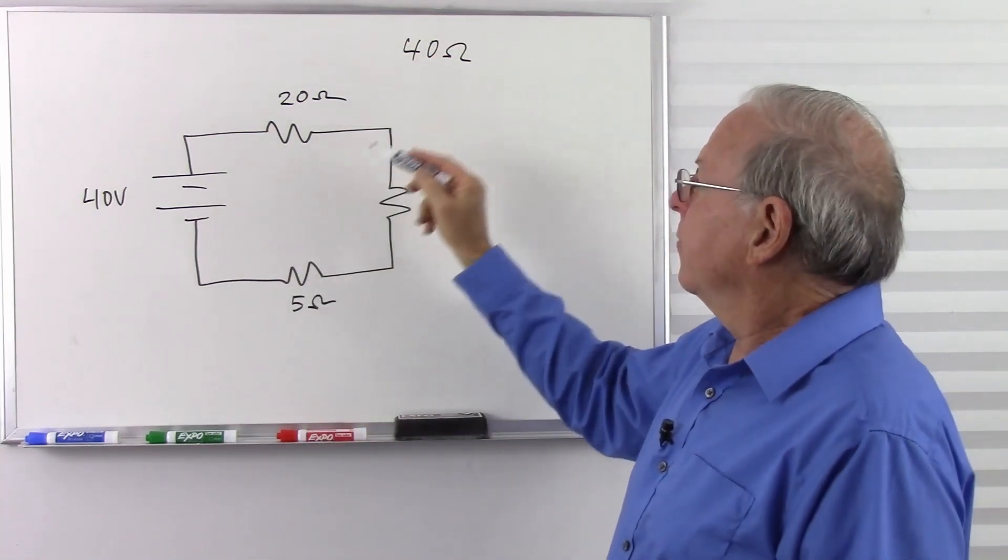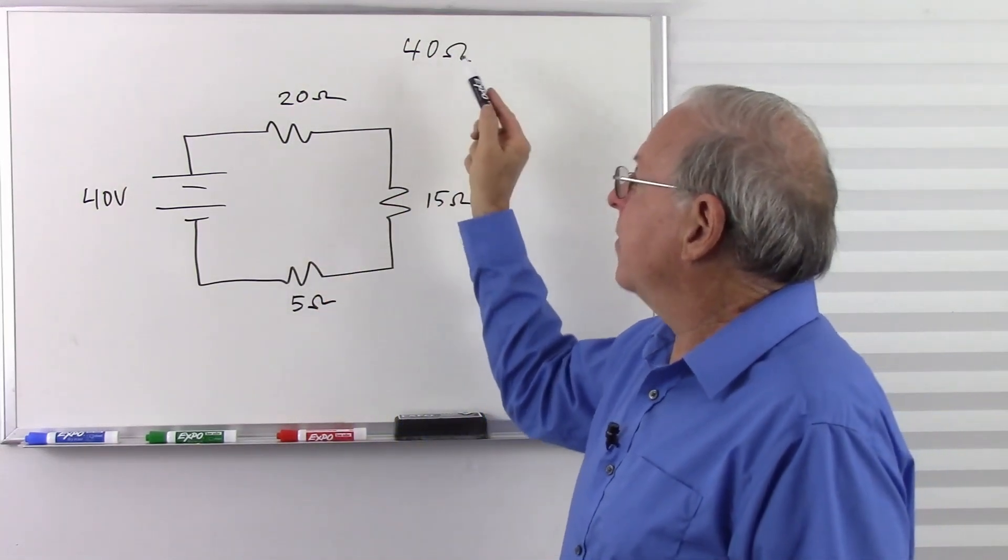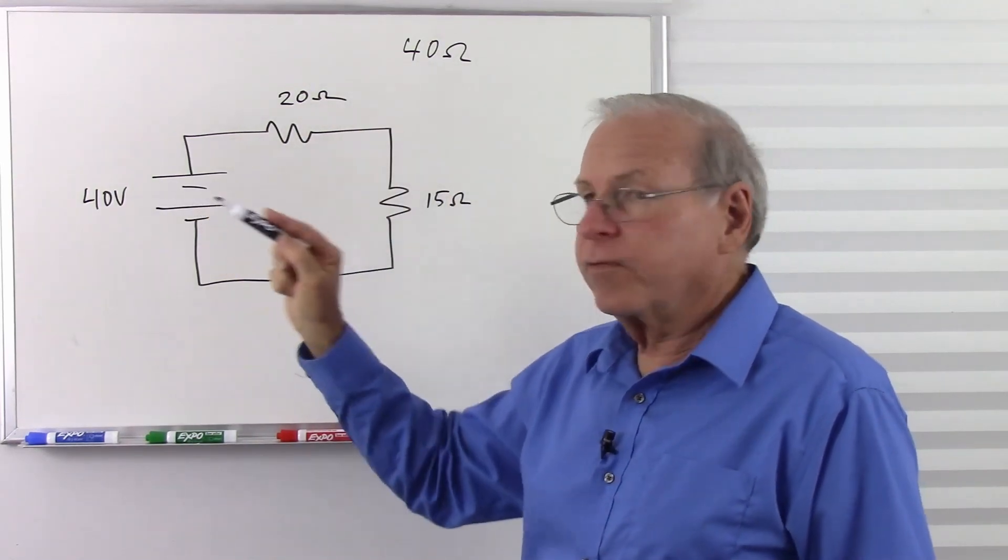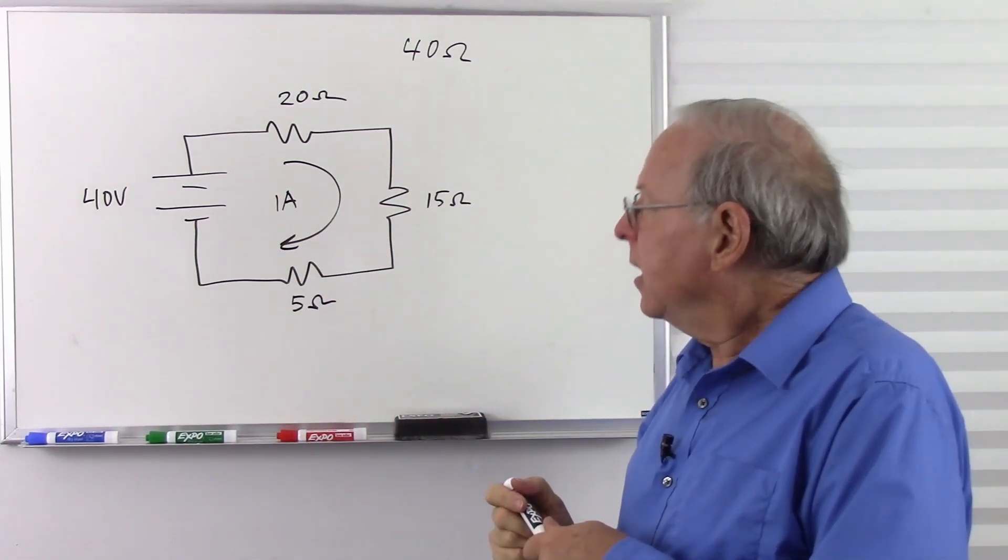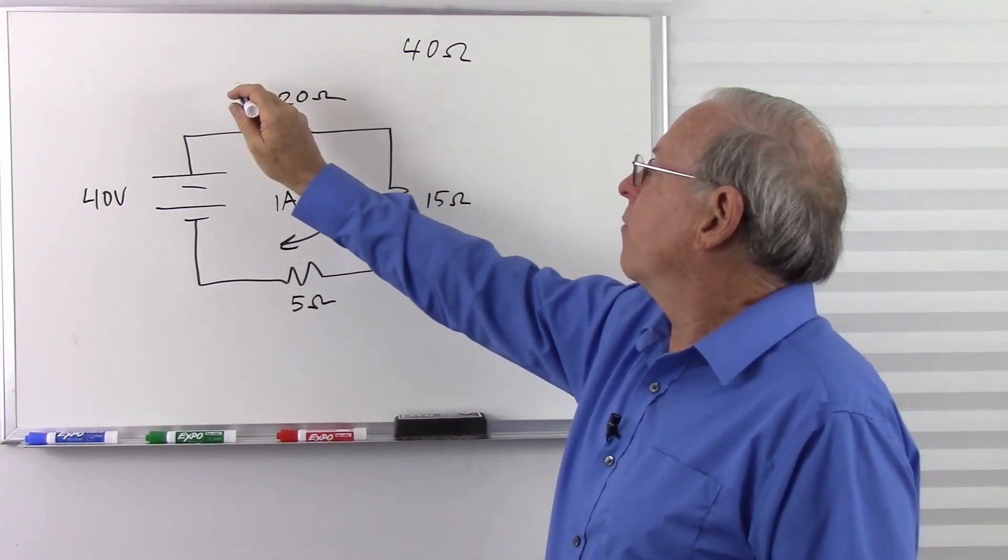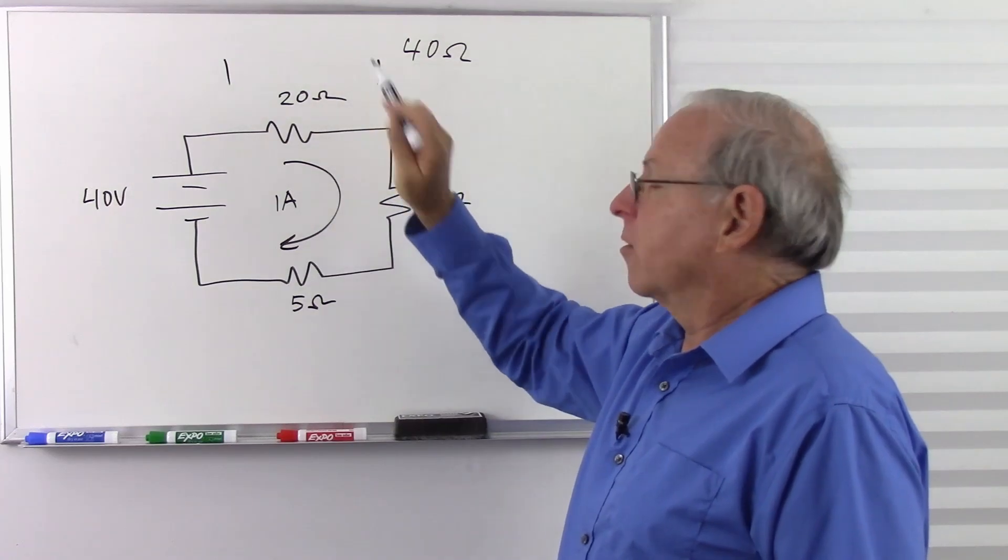So 20 plus 15 plus 5 is a total of 40 ohms. Makes a nice easy number. If we want to know our current, we simply divide into our voltage. 40 goes into 40 one time, and we have 1 amp of current. With that 1 amp of current across 20 ohms,